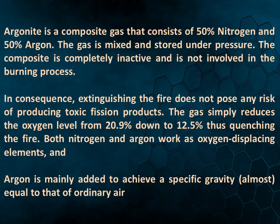In consequence, extinguishing the fire does not pose any risk of producing toxic fission products. The gas simply reduces the oxygen level from 20.9% down to 12.5%, thus quenching the fire. Both nitrogen and argon work as oxygen displacing elements. Argonite is mainly added to achieve a specific gravity almost equal to that of ordinary air.